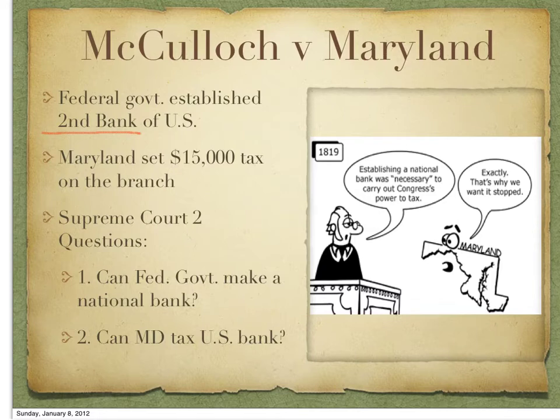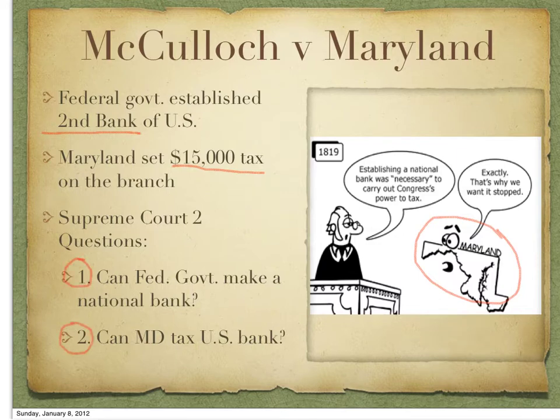One of those states, Maryland, decided to put a $15,000 tax on the branch in their state, and the branch just said they weren't going to pay the tax, so they went all the way up to the Supreme Court. John Marshall — the man responsible for Marbury v. Madison — ruled on this one as well. Two questions were brought to the court: can the federal government legally make a national bank under the Constitution, and if so, can Maryland tax a United States federal bank?